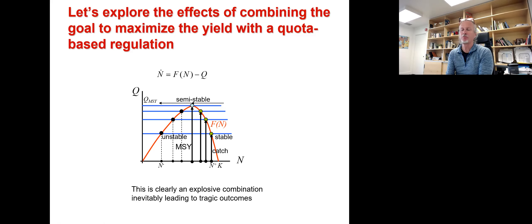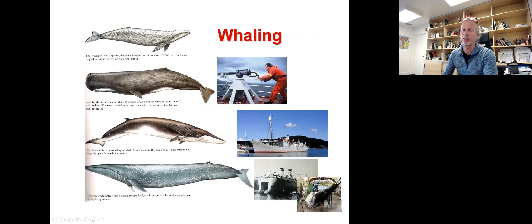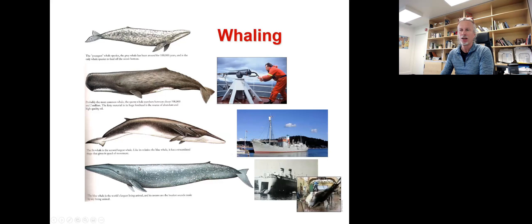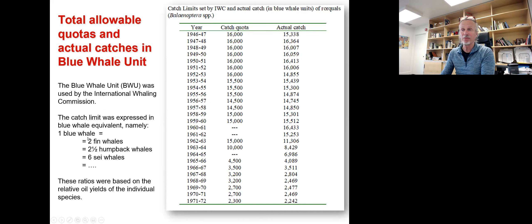It's actually a very dangerous situation because if we use a policy with constant quotas and we try to maximize how much we can harvest, just the little vagaries of the weather from year to year might easily push the population below this density, and if we do not adjust the quota very quickly, it will drop down to local extinction, which is not good. This is clearly a combination that inevitably leads to tragic outcomes: local extinction of the stock, loss of jobs, and harvest collapse. Certainly something not desirable. You might guess who's going to use such policies, but actually this has been a policy used for whaling.